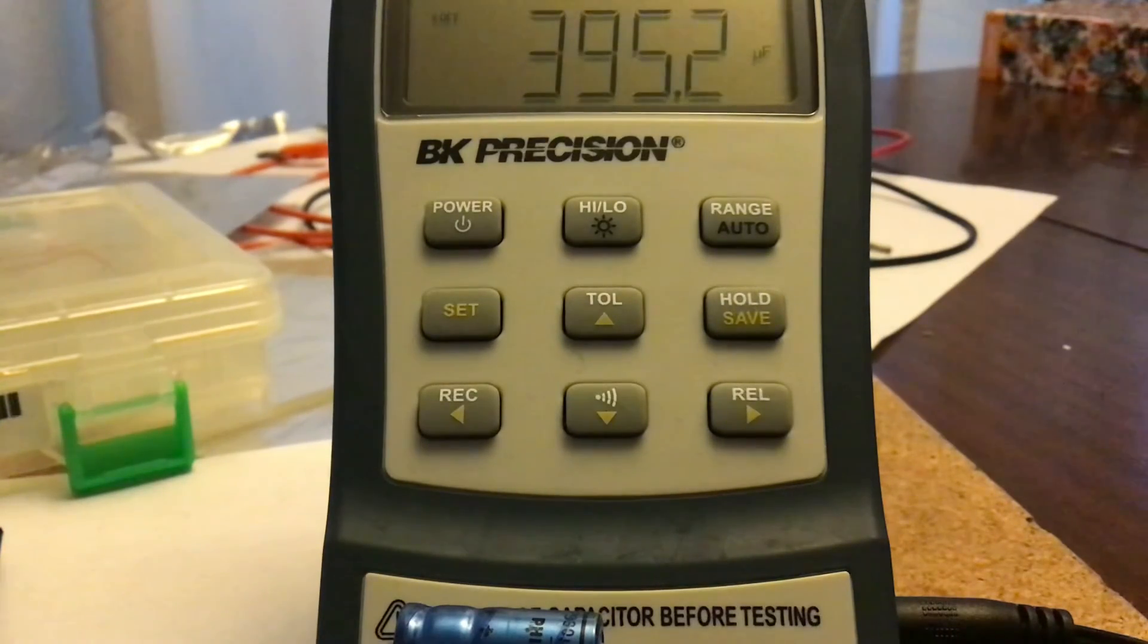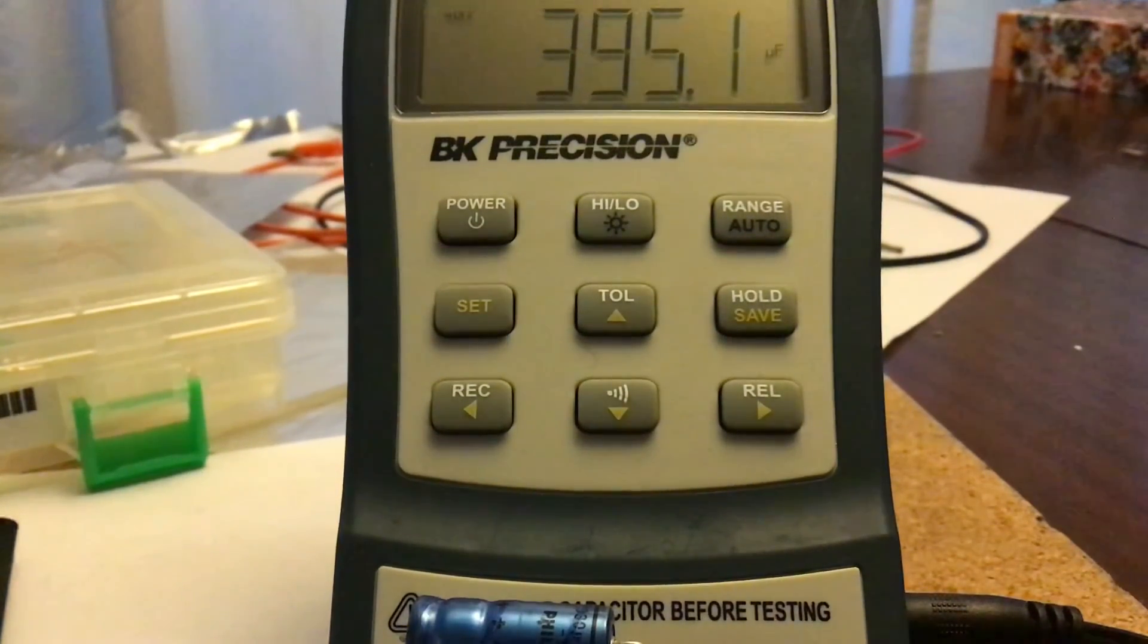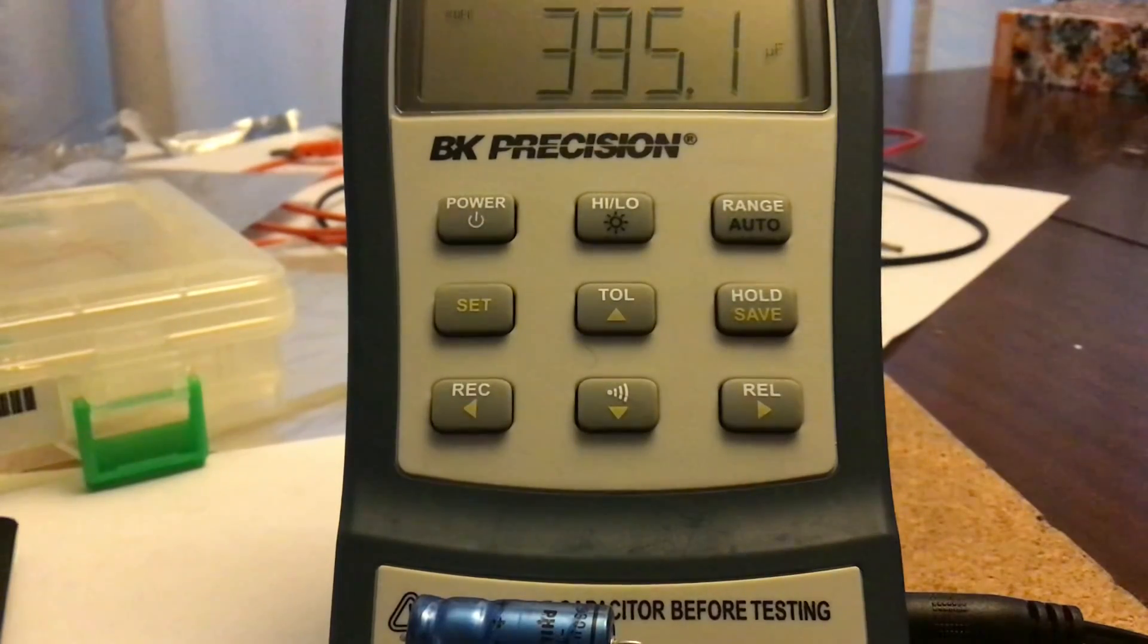Okay, 395.2. So is that 50% above 330? Which obviously it is. So 395.2. Have those values for the next experiment. We're going to put all three of them together in series.